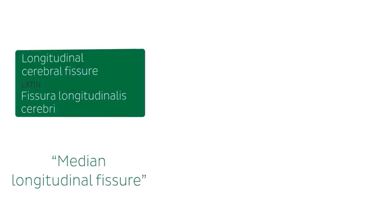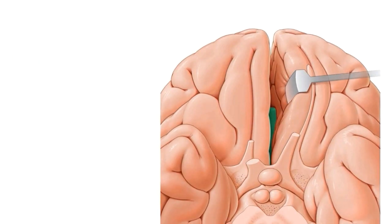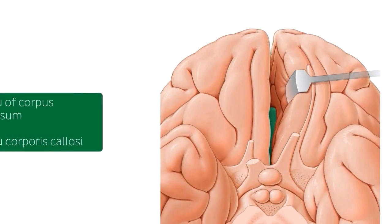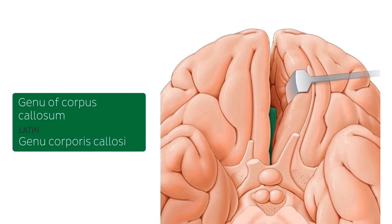One structure we can see here is the genu of the corpus callosum, which I already mentioned. When we pull apart the longitudinal cerebral fissure at the frontal lobe, as you can see here on this image with this tool, we can see the corpus callosum from the inferior view of the brain, specifically the genu of the corpus callosum, seen here highlighted in green.